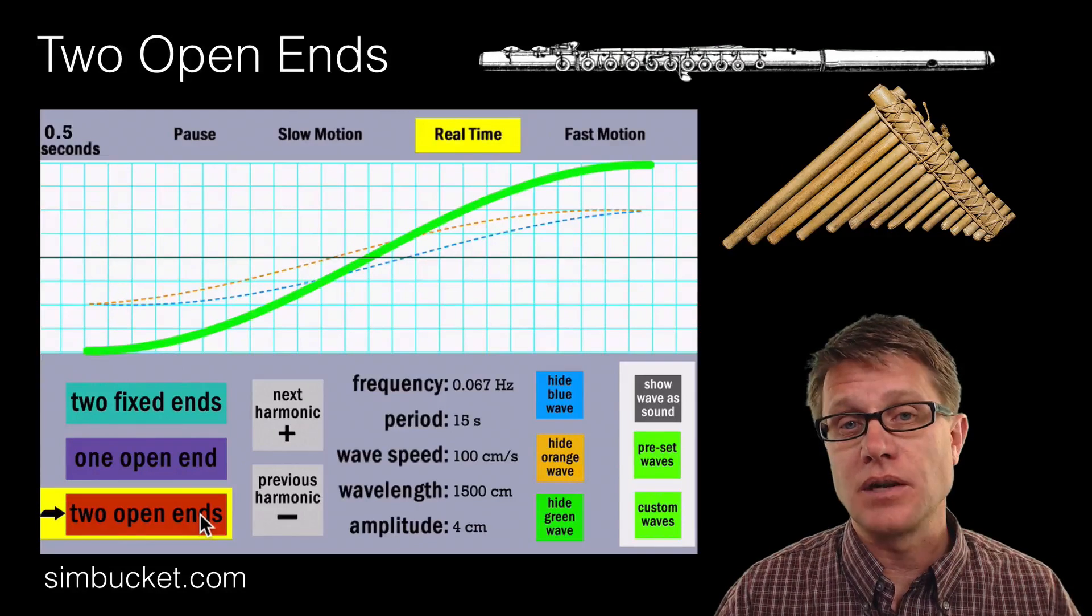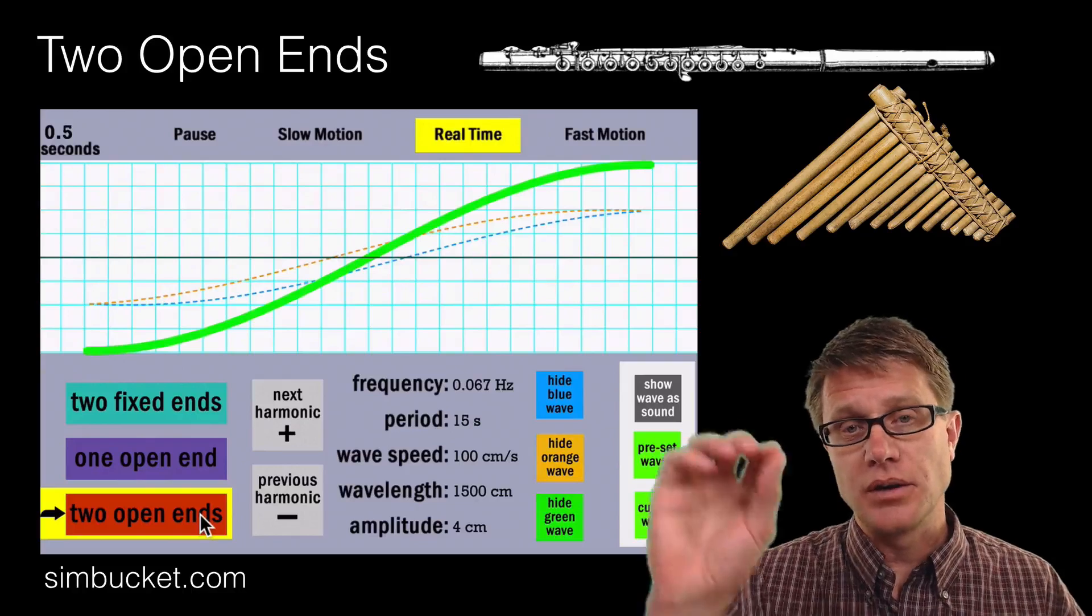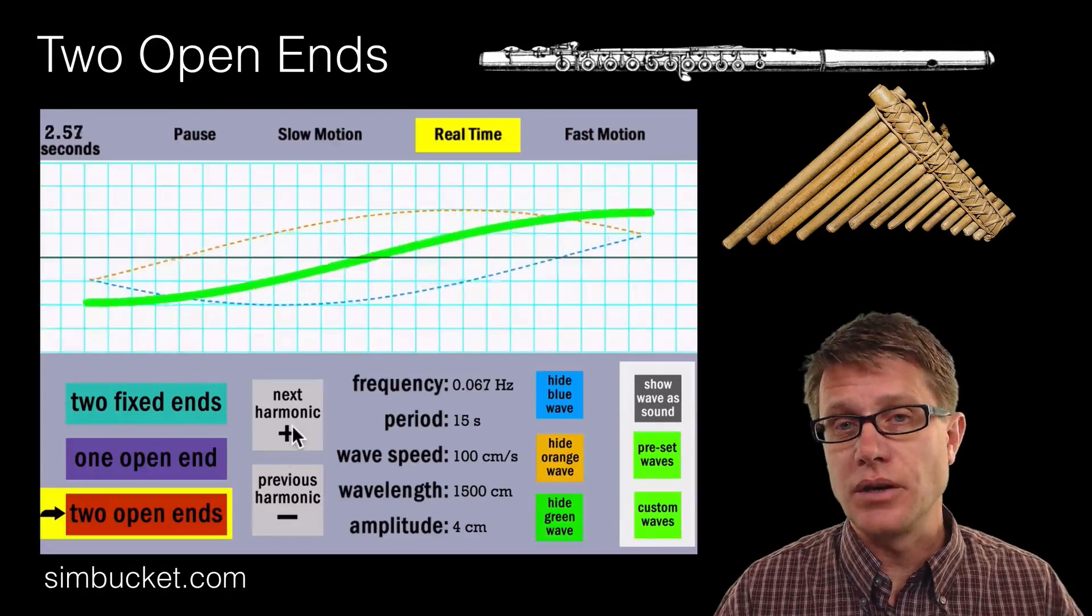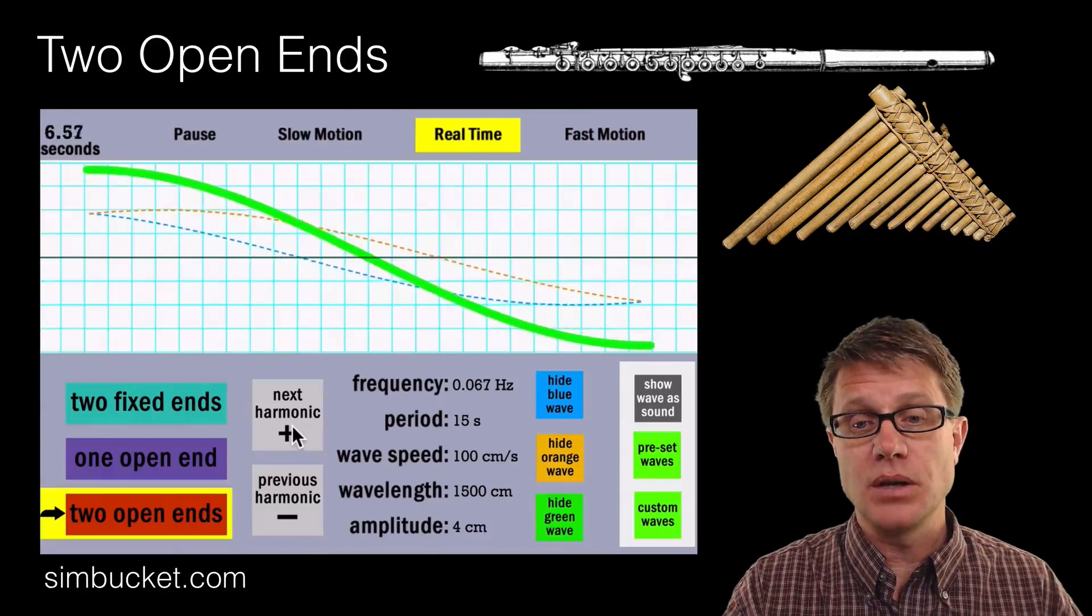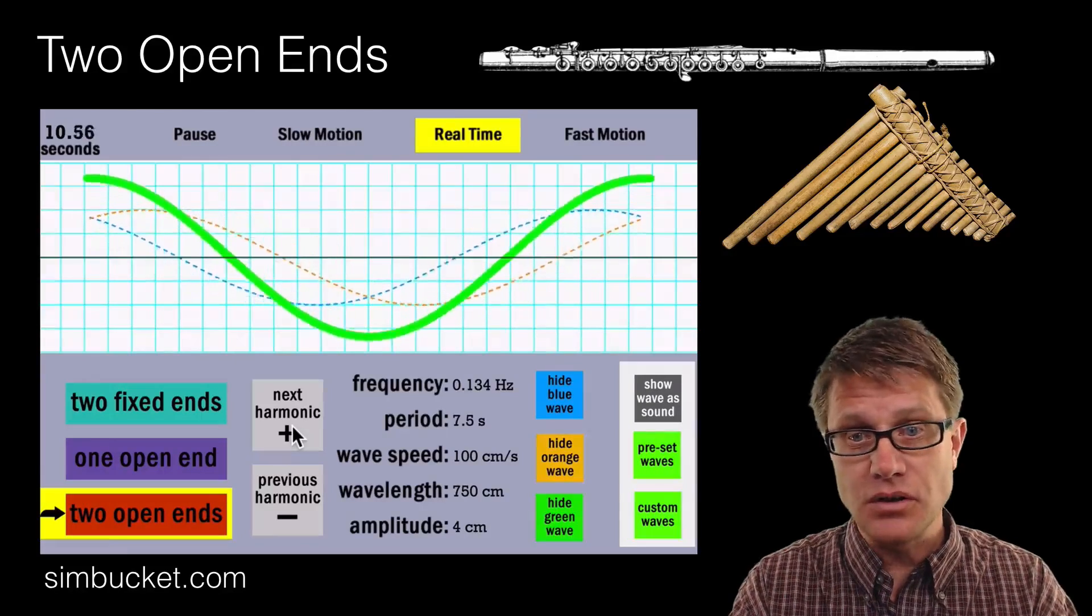If we then look at something that has two open ends, like a flute. A flute you do not blow in one end. You are blowing on the top to create the vibration. Or a pan flute would be an example of that. And so what is going to create the standing wave here? Well in this first harmonic we have the node in the middle. And then we have anti-nodes on either side. Now we have two nodes near the middle, anti-nodes on the side.